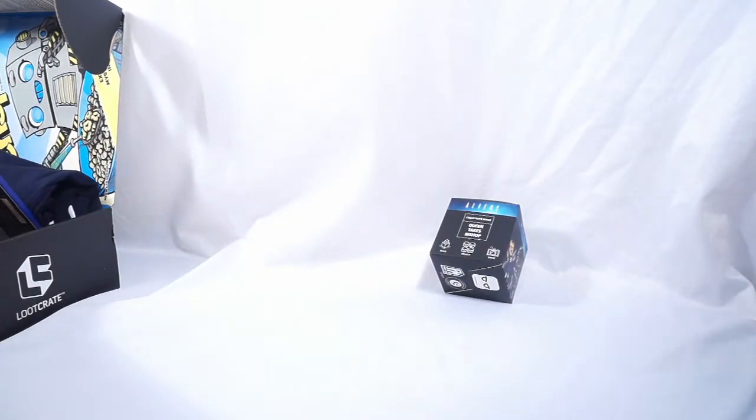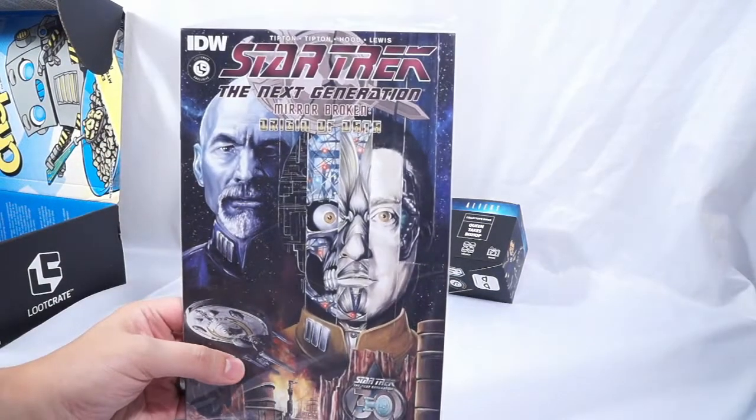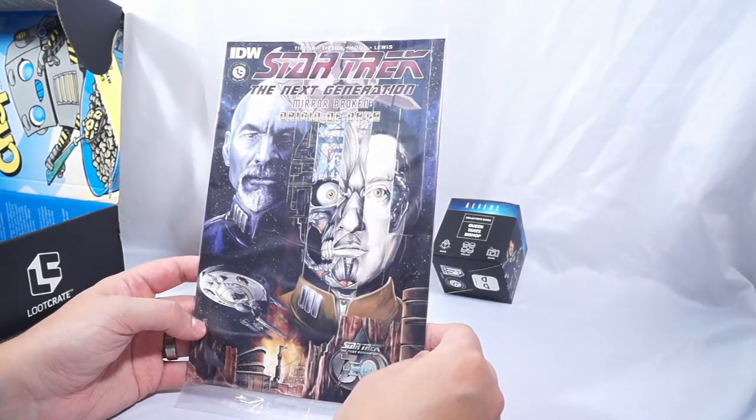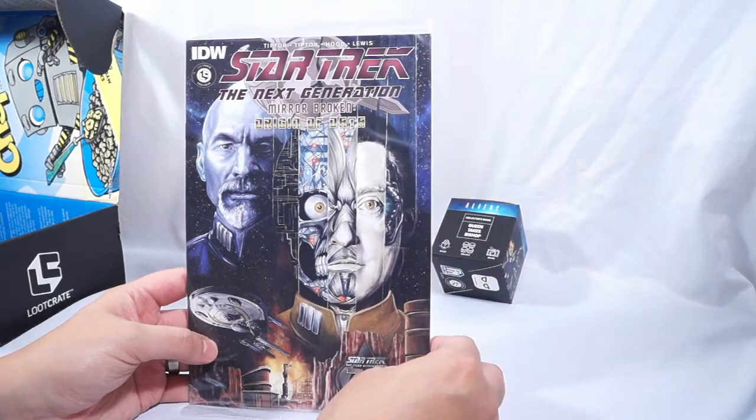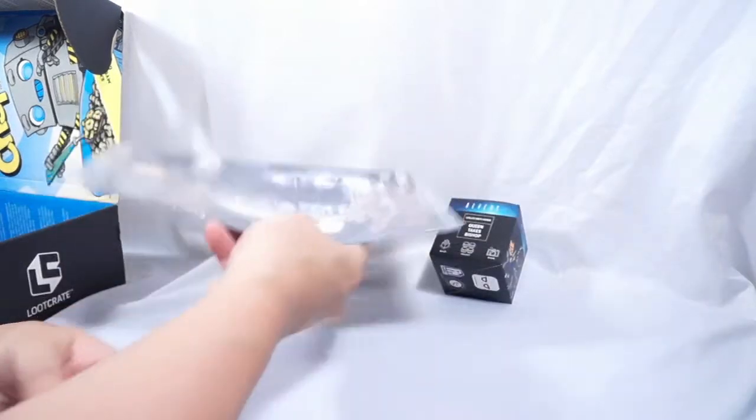Second item. We have a Star Trek The Next Generation comic book. I guess this will follow the robotic theme because there is Data and it's the origin of Data. Oh cool. Also a Loot Crate exclusive comic book.